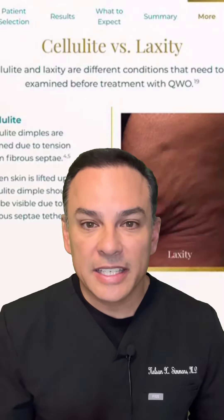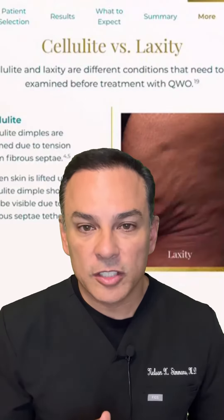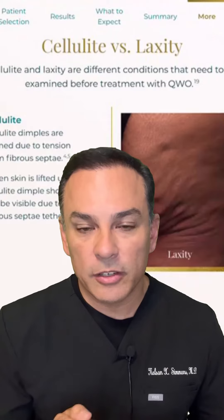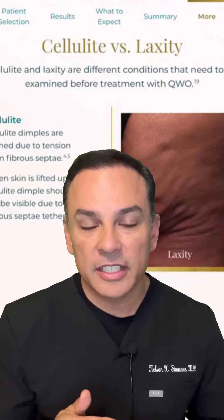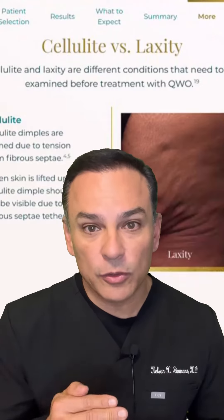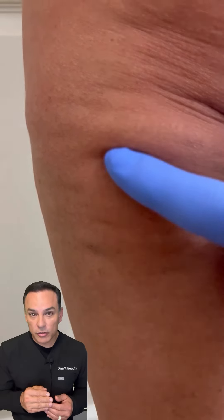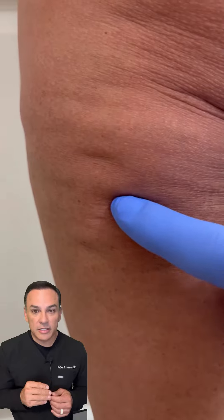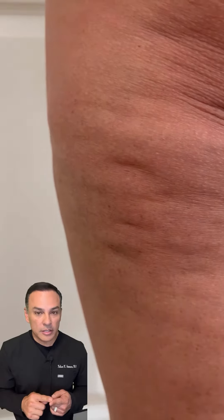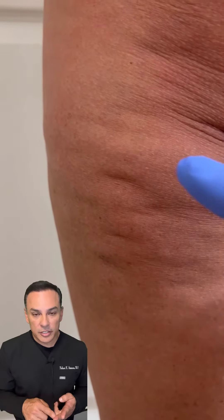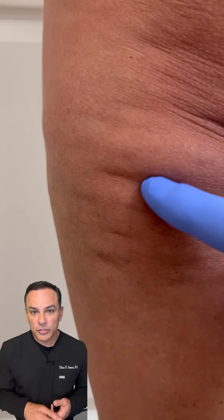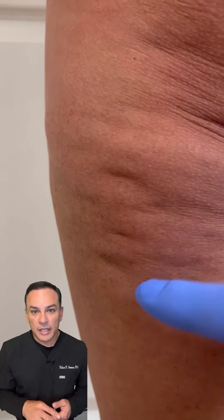How do you tell the difference between cellulite and skin laxity? Skin laxity is caused by a void underneath the skin that allows the skin to fold over on itself. This usually occurs when someone has had significant weight loss, liposuction, or trauma to an area.